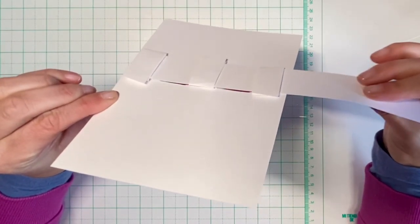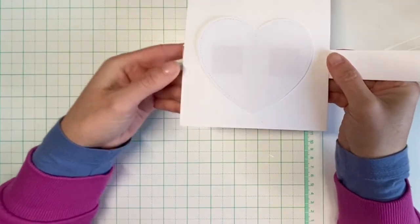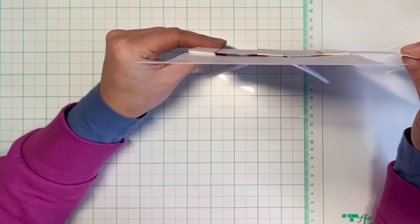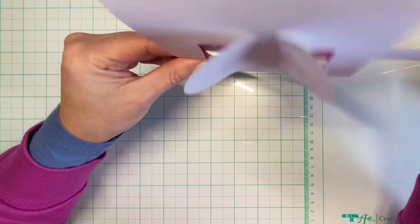I'm repeating that step twice and this is what I end up with. This will guide my pull tab and keep it straight.